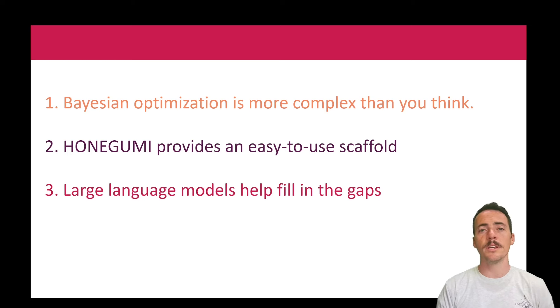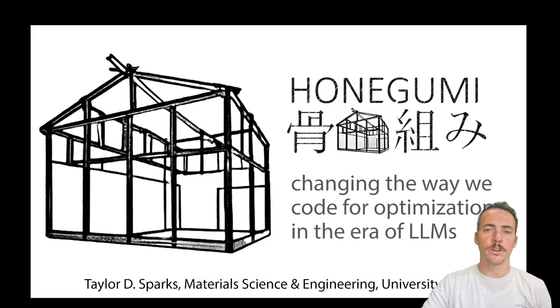Two, that Honogumi provides an easy-to-use scaffold. Think of it like a code template, right? In fact, that's what the word Honogumi means. We show you a picture here of like a Japanese house. Honogumi is a Japanese word that means skeletal framework, and just like once you build the skeleton of a house, you can then do the fine details of decorating it or modifying it as you see fit once you have that skeleton in place. That's what Honogumi is going to do.